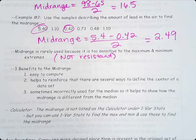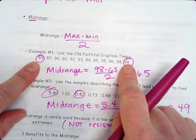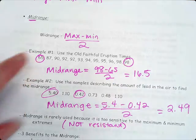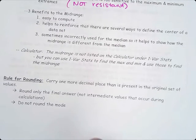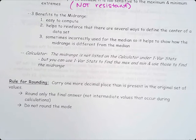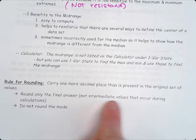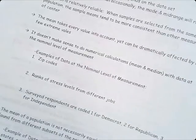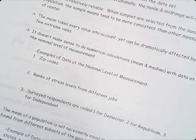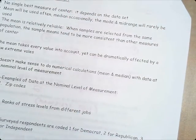Three benefits of the midrange: easy to compute, helps to reinforce that there are several ways to define the center of the data, and sometimes incorrectly used for the median. So it helps to show how the midrange is different from the median. Calculate midrange is not listed, but you can easily do it just by adding your max and min, dividing by 2. Rule for rounding: carry one more decimal place than is present in the original set of values. And then round only the final answer, not the intermediate values that occur during calculations, and do not round the mode.